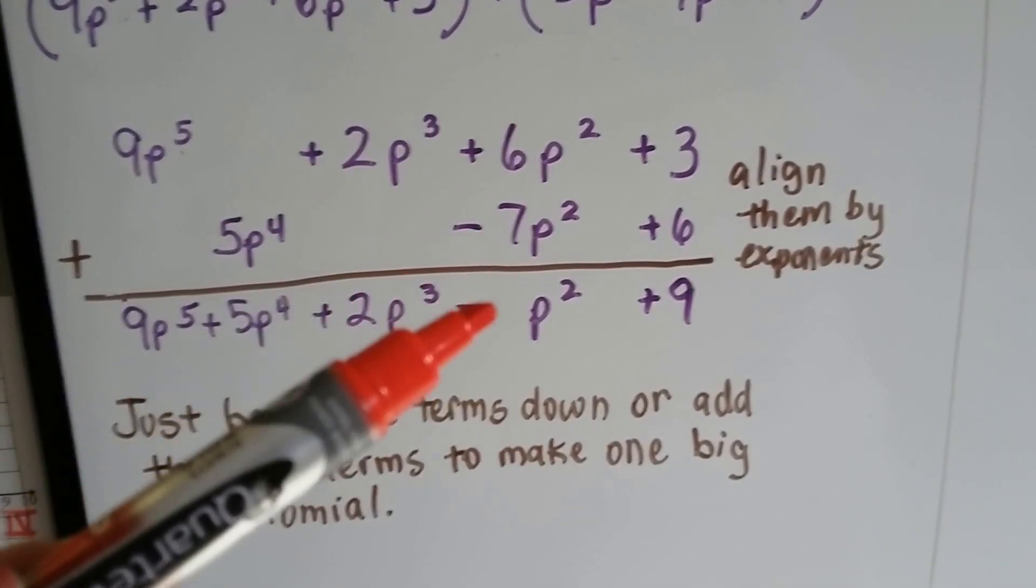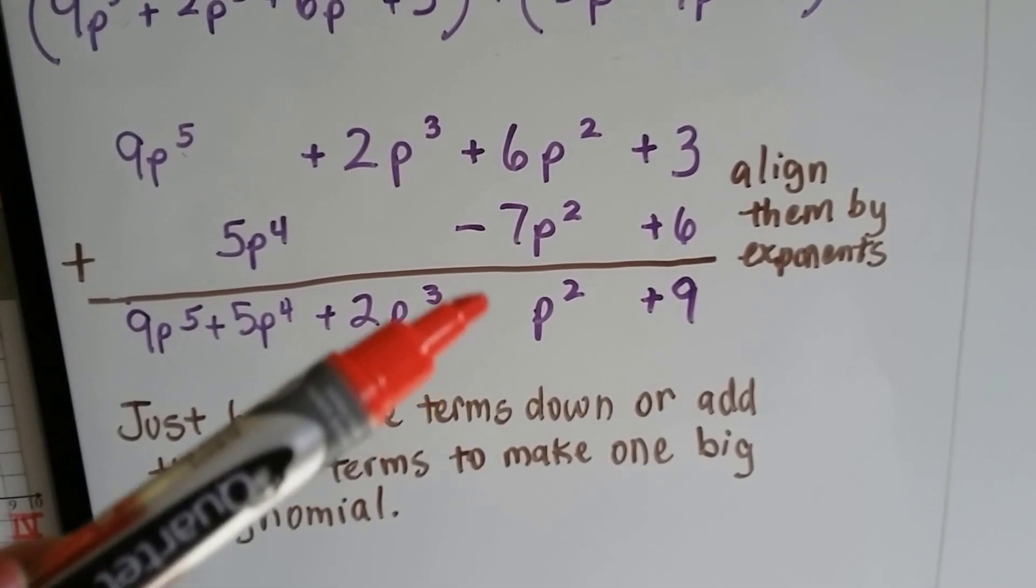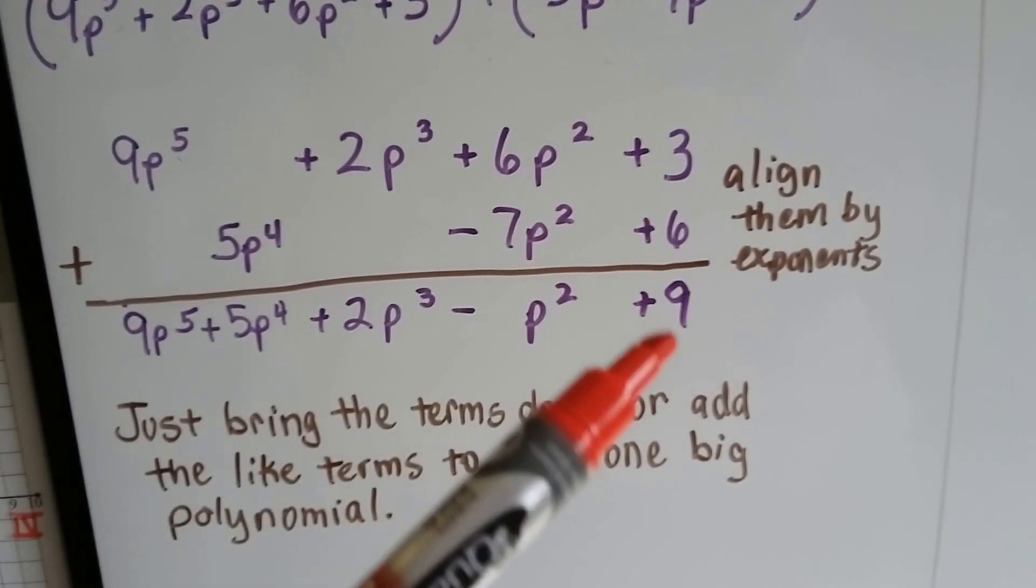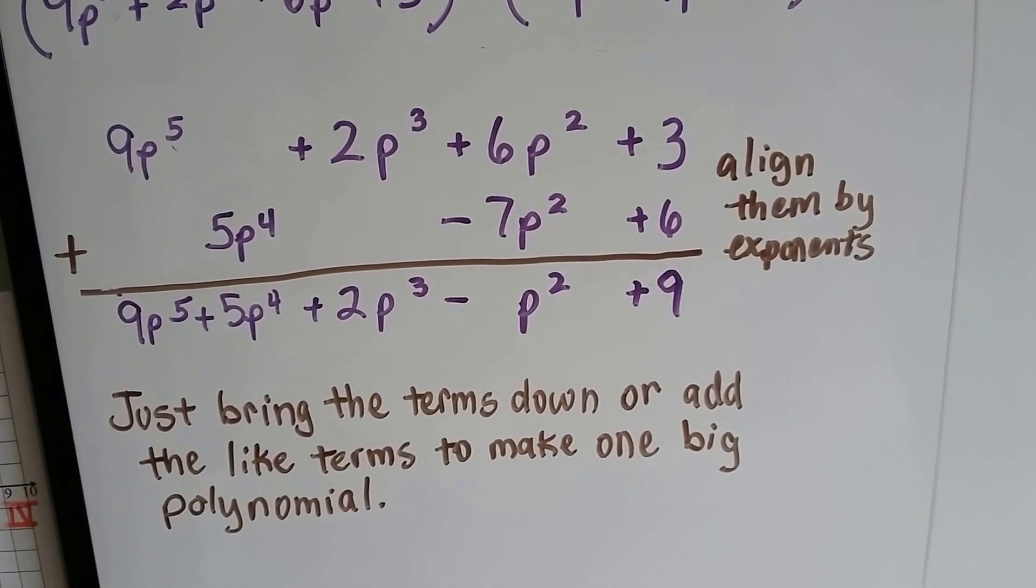6p take away 7p is a negative 1p. So we don't write our 1, we just have a p to the second power. And 3 and 6 makes 9, so we have one big polynomial. See?